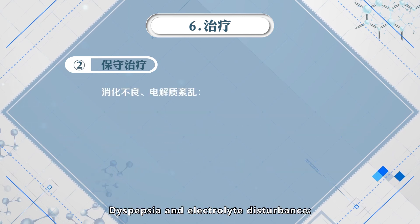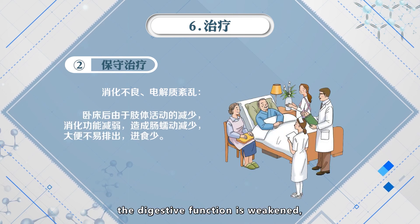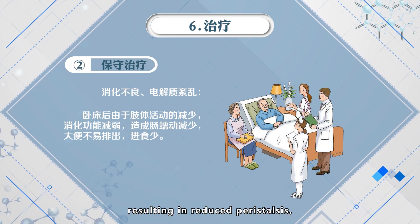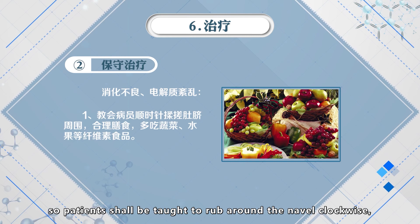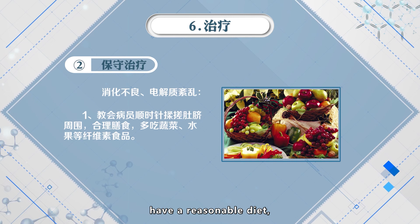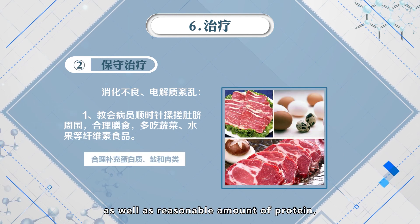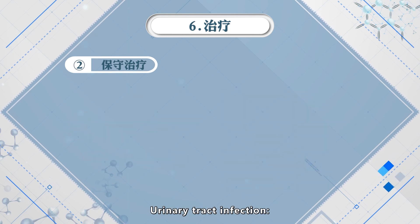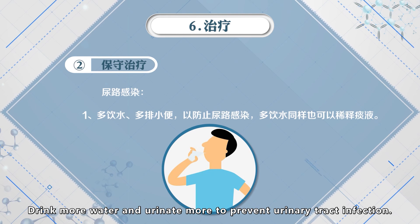For dyspepsia and electrolyte disturbance: due to reduced limb activity after bed rest, digestive function is weakened, resulting in reduced peristalsis, difficulty in defecating, and less food intake. Patients should be taught to rub around the navel clockwise. They should have a reasonable diet — eat more vegetables, fruit, and other high-fiber foods, as well as reasonable amounts of protein, salt, and meat. For urinary tract infection prevention, drink more water and urinate more frequently.